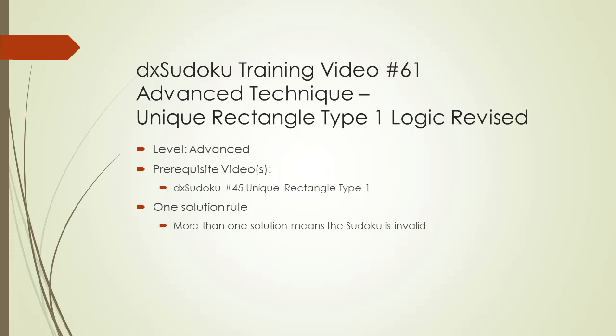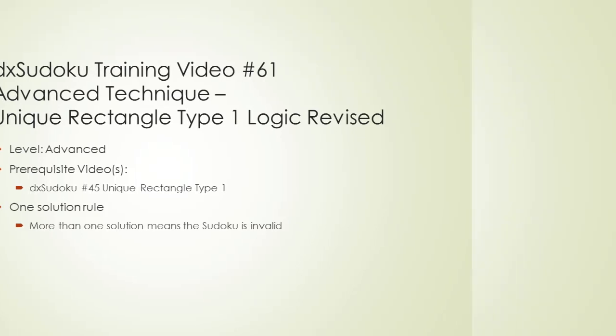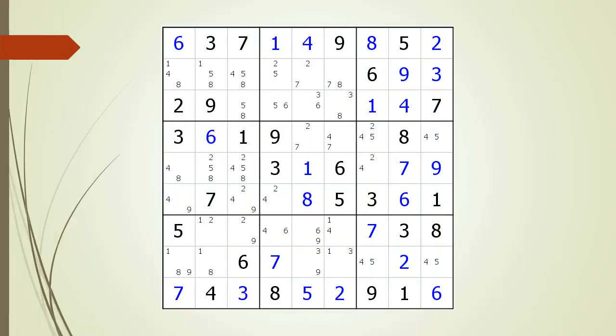All the uniqueness puzzle solving techniques are based on the one solution rule. The one solution rule means for a Sudoku to be considered valid it must have only one solution. Consider the following Sudoku in progress.